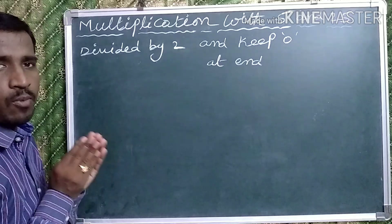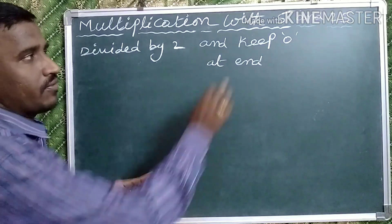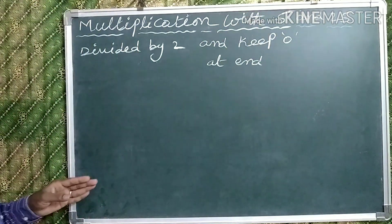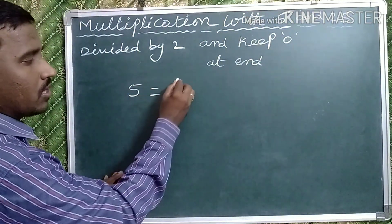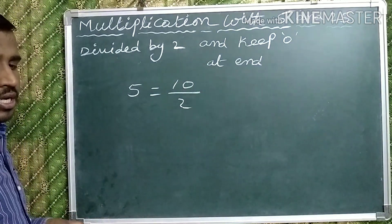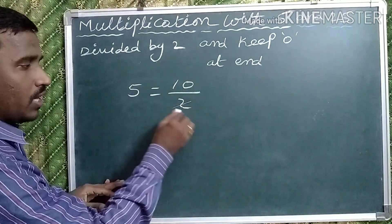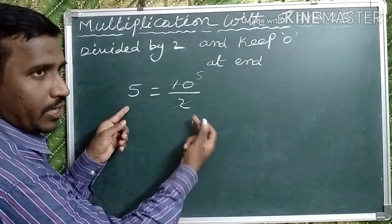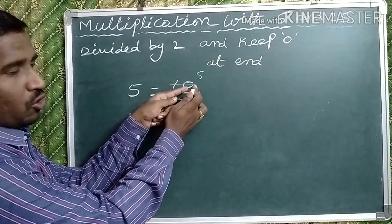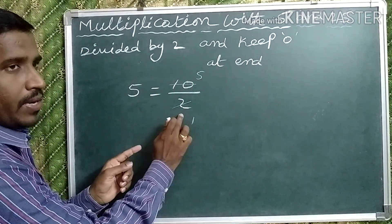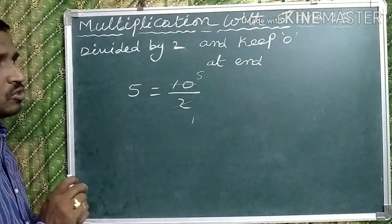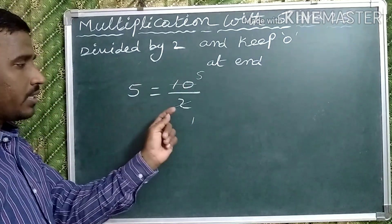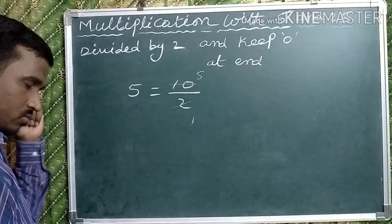Today we will discuss multiplication with 5 and multiplication with 25. In this case, 5 can be written as 10 by 2. So in the shortcut method, keep 0 at the end and divide by 2.